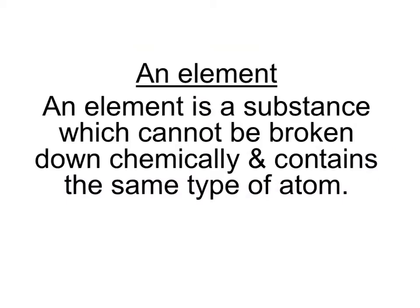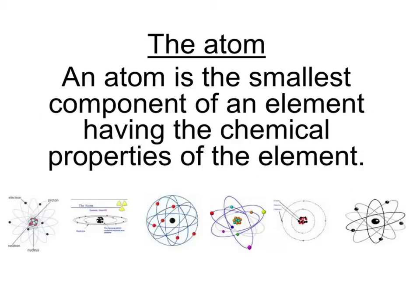The periodic table has the known elements, and an element is a substance which can't be broken down into anything simpler. Every atom of an element is identical, but of course it's different to the atoms of all other elements. So each element has its own particular atom. In theory at least, the atom is the smallest component of any element which would have the same chemical properties as that element.